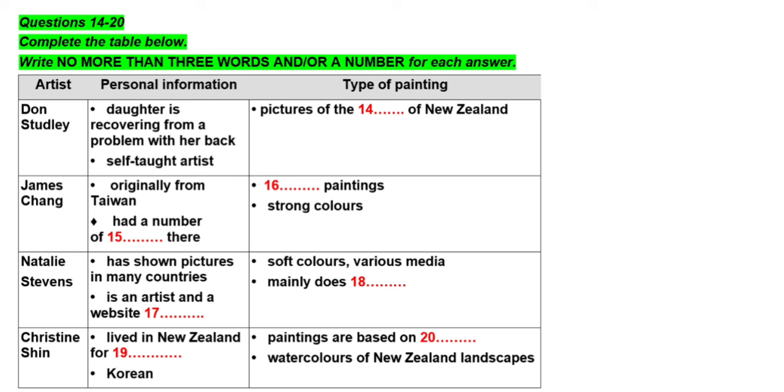One relative newcomer to New Zealand is James Chang who came here from Taiwan nine years ago at the age of 56. Mr. Chang had 13 exhibitions in Taiwan before he came to live here in Christchurch so he's a well-established artist and art has been a lifelong passion for him. His paintings are certainly worth looking at. If you like abstract pictures with strong color schemes you'll love them. Natalie Stevens was born in New Zealand but has exhibited in China, Australia and Spain. As well as being an artist she's a website designer. She believes art should be universal and her paintings use soft colors and a mixture of media. Most of her pictures are portraits so watch out some of them may even be friends of yours.